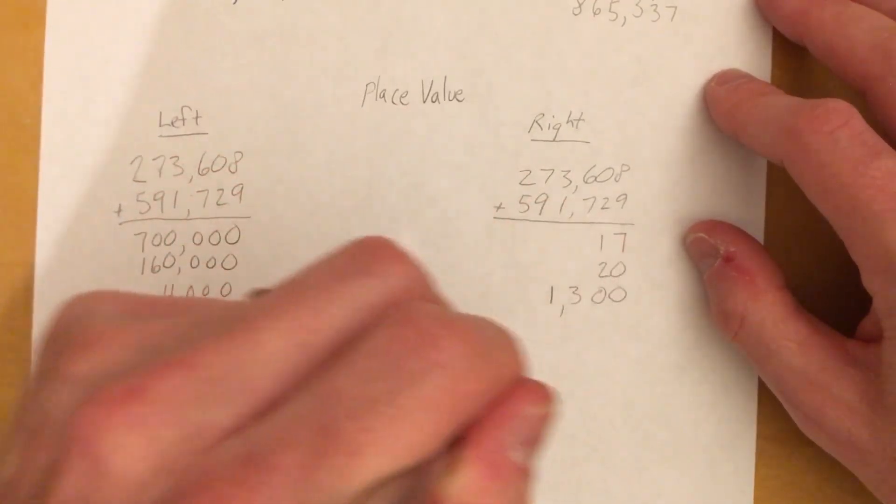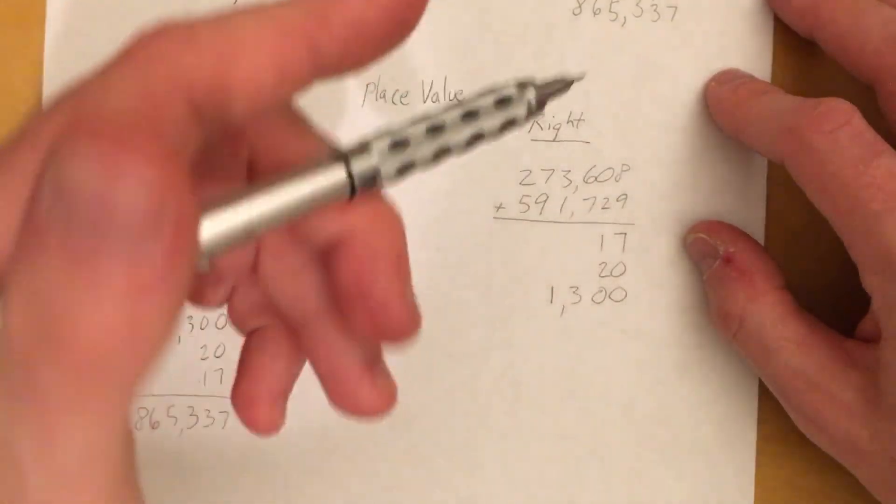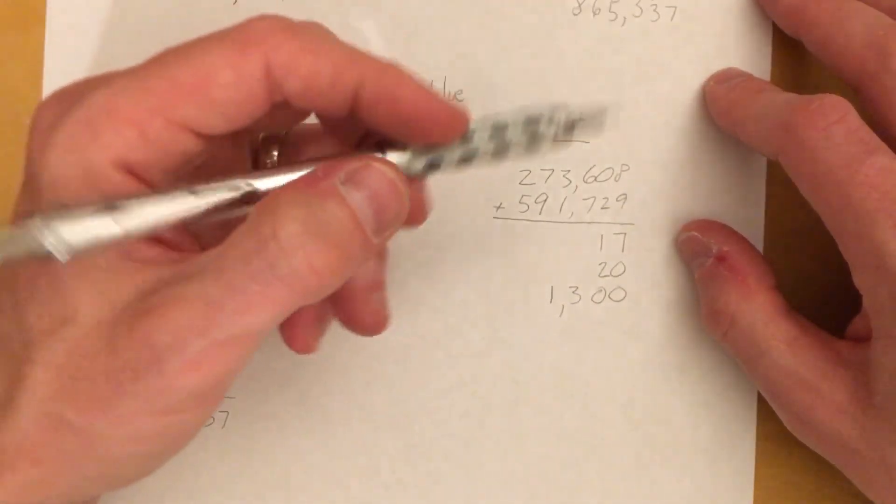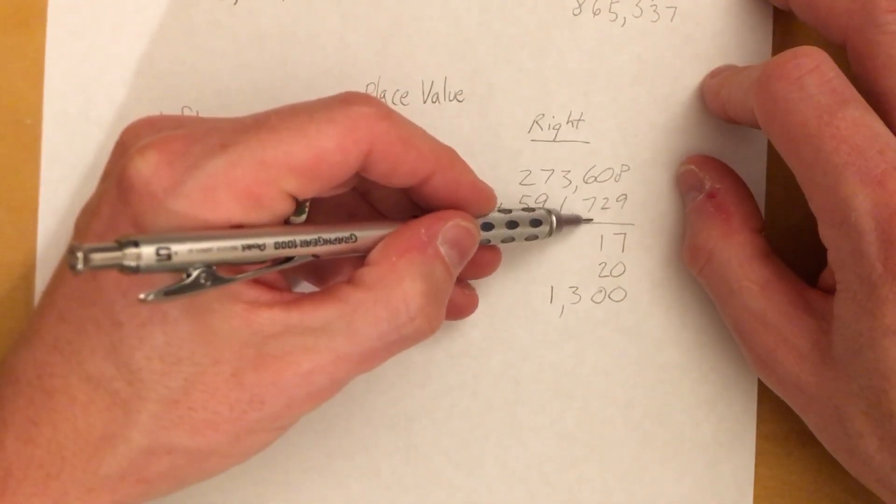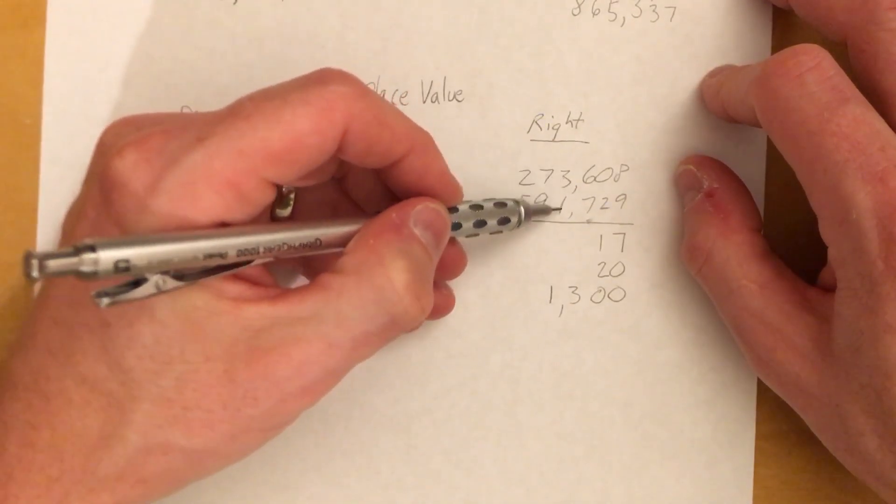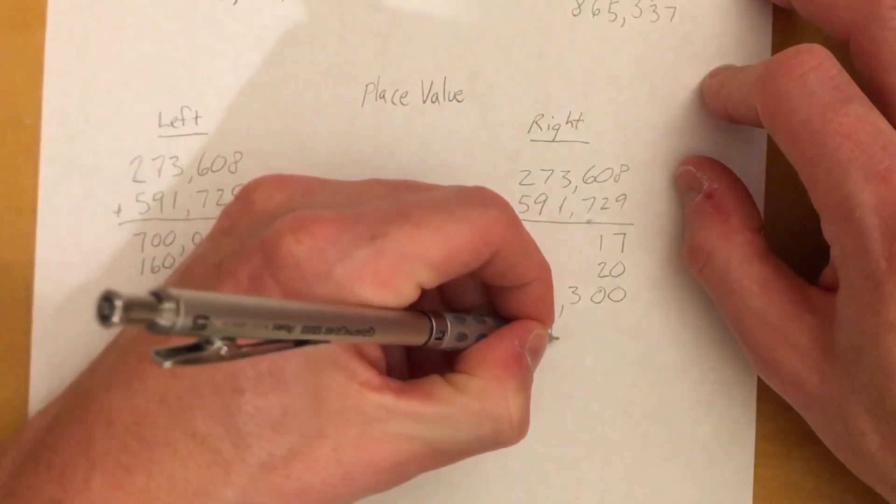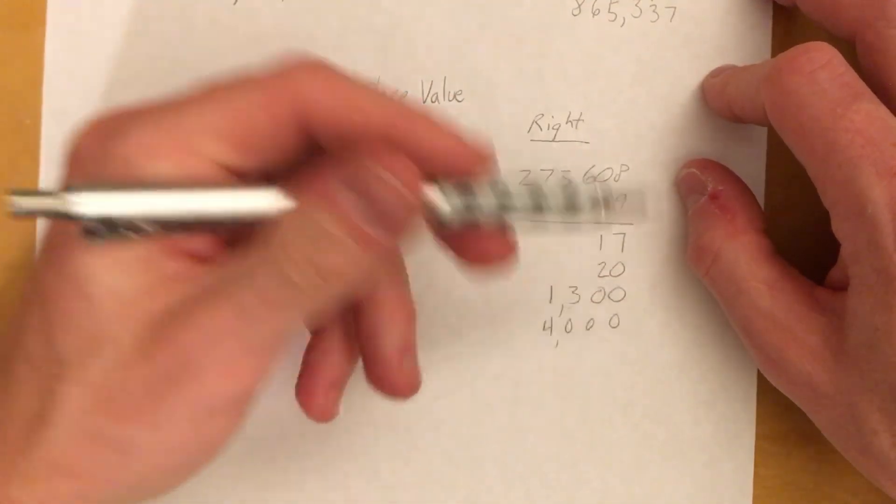We just did our hundreds place, so now we're going to do our thousands place. We have 3,000 plus 1,000 equals 4,000. Be very careful to line everything up; otherwise, like I said, it'll get really confusing really fast.